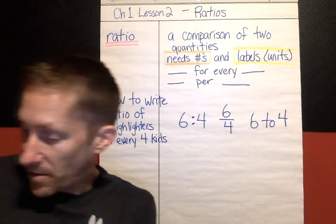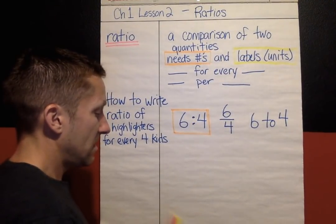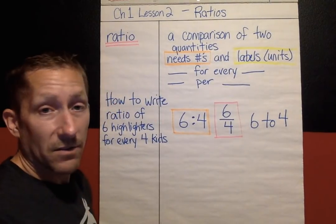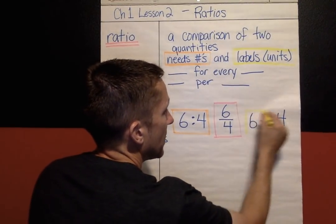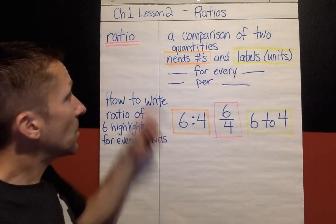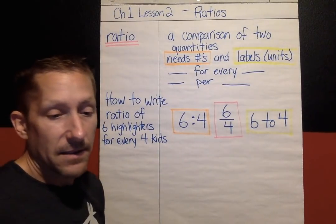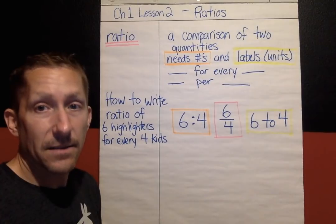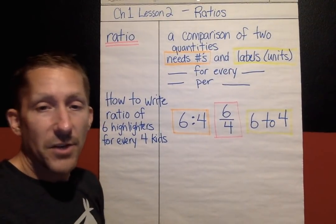So let's mark those up with our highlighters. You can see clearly there's one way to write a ratio: using a colon. Probably the most common way that we'll write ratios is as a fraction. You can write ratios and they look just like a fraction, but again, a ratio is going to have labels and words that go with it. And the last way is you could say six to four using the word T-O. To recap: a ratio is a comparison of two different amounts, you need numbers and units or labels, and you can write a ratio in three ways. Your practice today is going to be writing ratios and also the meaning of the ratio — the meaning is the words. So six highlighters for every four kids — that would be the meaning. Ratio has numbers and meaning.